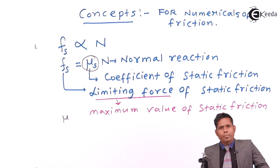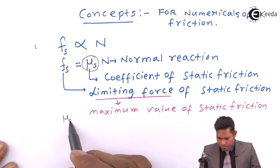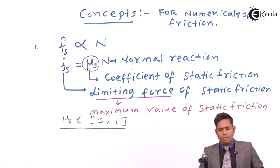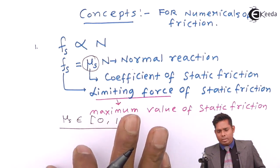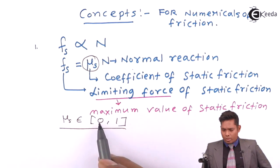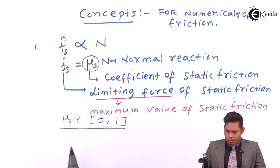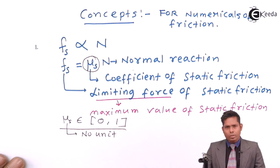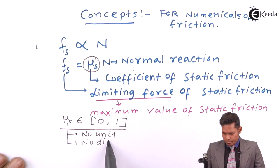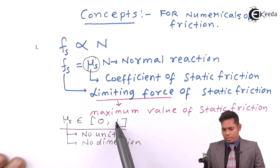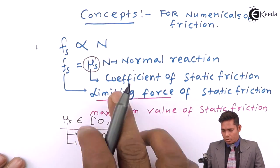The range of mu s is from 0 to 1. It can be 0, or maximum 1 — it cannot be more than 1 or negative. If the surface is perfectly smooth, mu is 0. If the surface is very rough or sticky, mu s is 1. So it has no unit and no dimension.